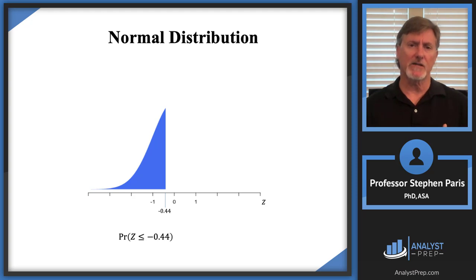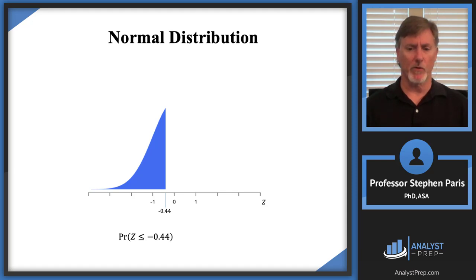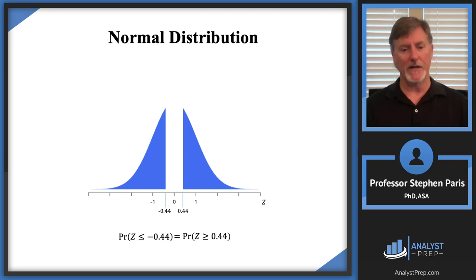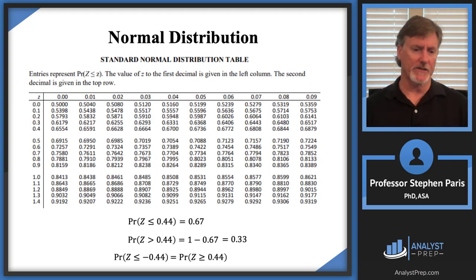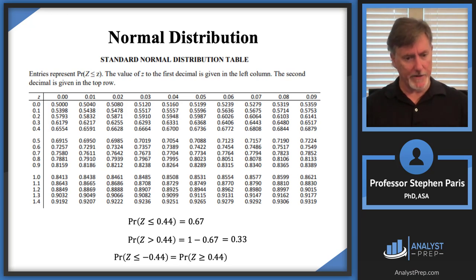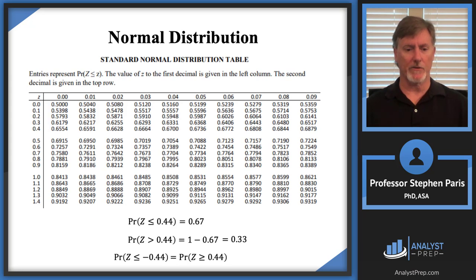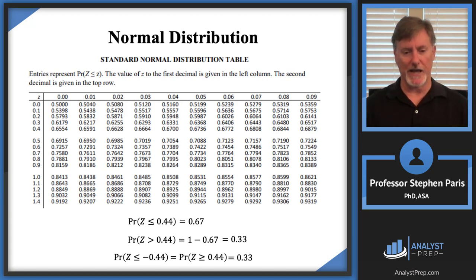Looking at the probability that Z ≤ −0.44, that's the area in the left tail of the distribution where z values are less than or equal to −0.44. By symmetry of the bell-shaped curve, the area in the left tail corresponding to z = −0.44 equals the area in the right tail corresponding to z = +0.44. So the probability that Z ≤ −0.44 equals the probability that Z > +0.44, which we calculated as 0.33.